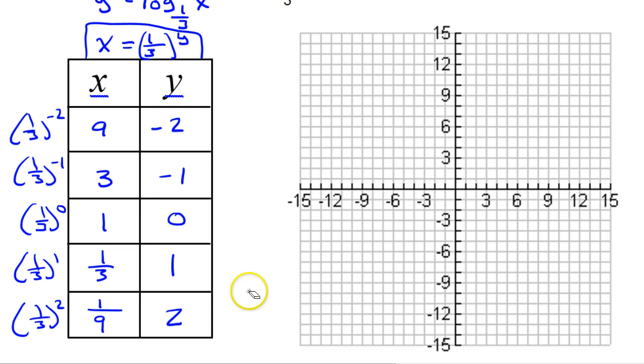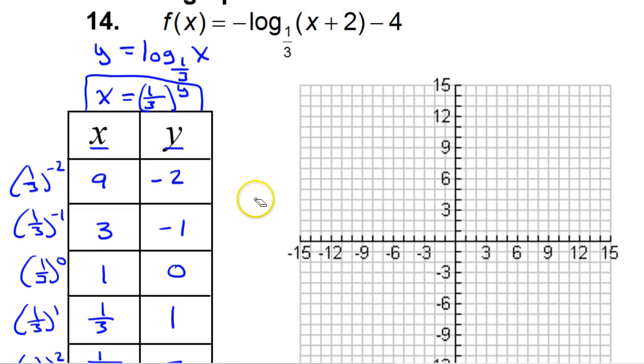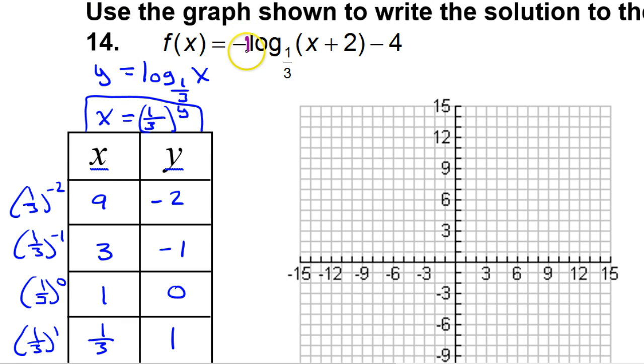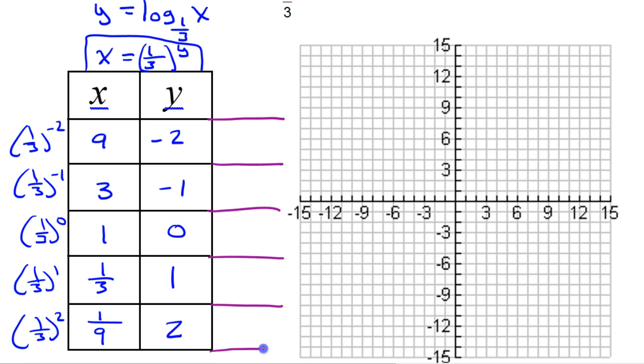Now, sometimes we need a third column when there is an a value. So there is an a value, even though it's just negative 1. We need to deal with this negative sign here in the front. Think of it as multiplying by negative 1. So we will create a third column anytime there is an a value in front. And we will make that third column by doing the a value times y. So multiplying by negative 1 just changes all the signs. So this will be 2, 1, 0, negative 1, negative 2. So we have a brand new y column so we can throw this out.